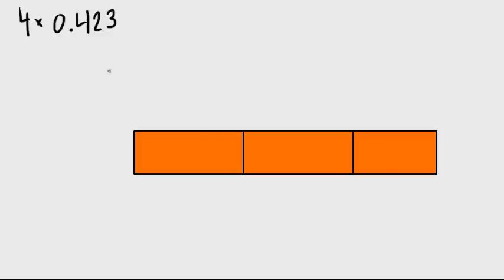So notice right here, I have three boxes. The reason, here's the reason, the reason why I have three boxes is because I have three numbers here in my multiplication place, right? So one, two, three, that's what this is demonstrating.